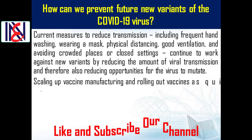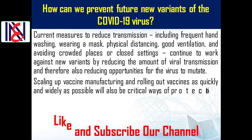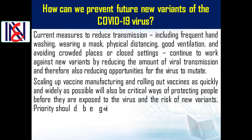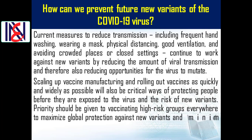Scaling up vaccine manufacturing and rolling out vaccines as quickly and widely as possible will also be critical ways of protecting people before they are exposed to the virus and the risk of new variants. Priority should be given to vaccinating high-risk groups everywhere to maximize global protection against new variants and minimize the risk of transmission.